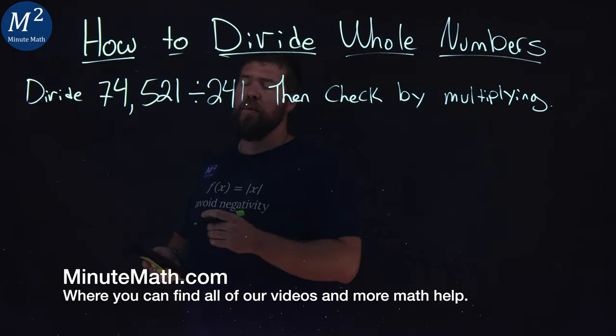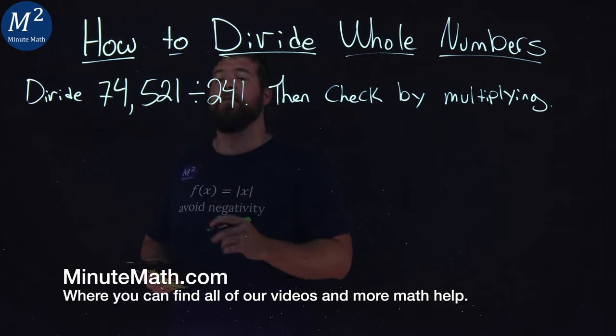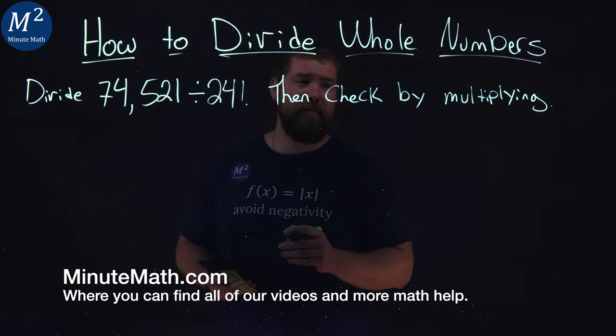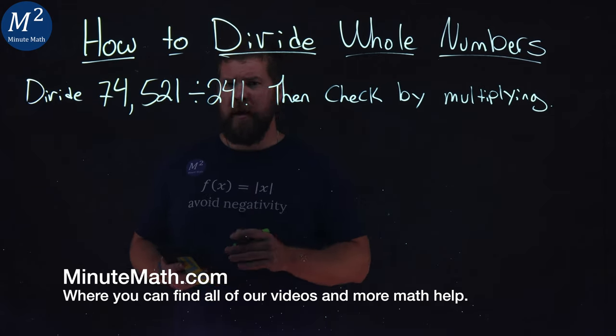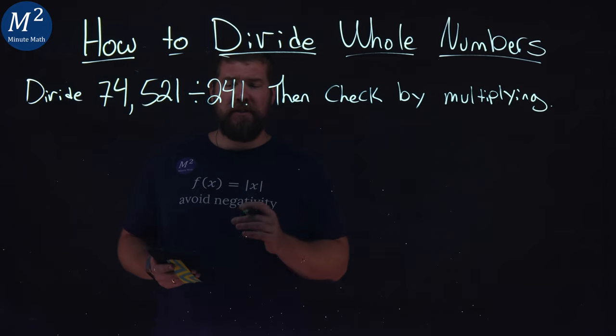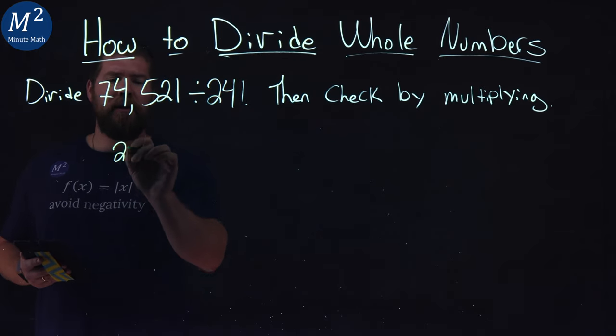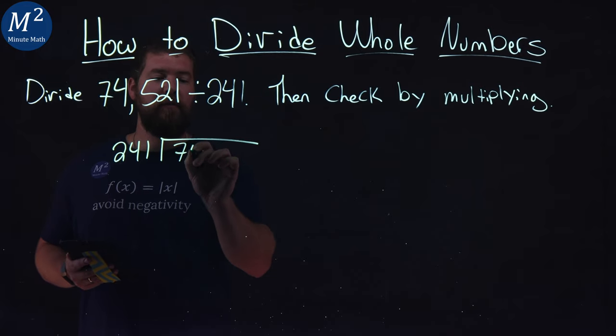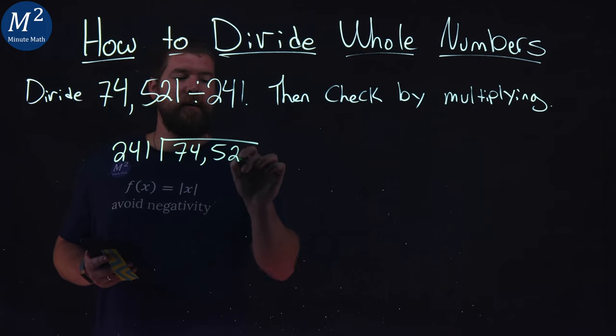We're given this problem right here. We want to divide 74,521 by 241. I'm going to check by multiplying. We still apply our long division here. We have 241 going into 74,521.